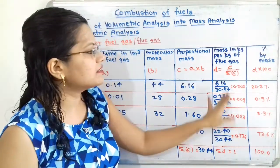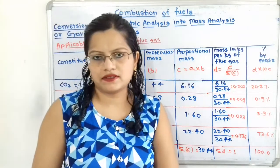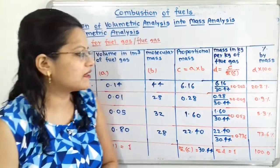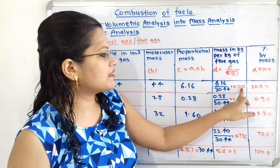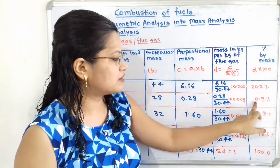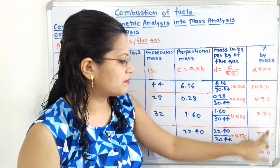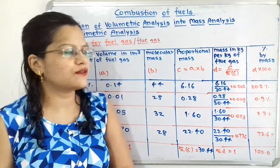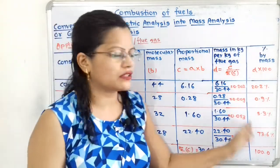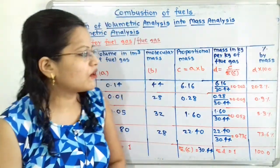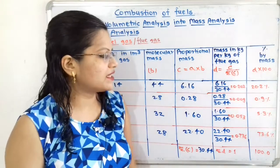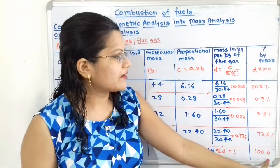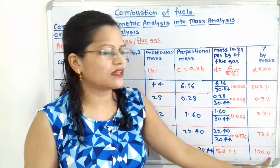Now we convert D into percentage by mass by multiplying by 100. So CO₂ = 20.2%, CO = 0.9%, O₂ = 5.3%, and N₂ = 73.6%. We can cross-verify by adding all these percentages; the total is 100%.